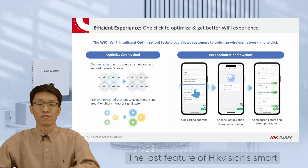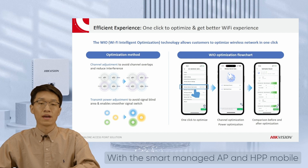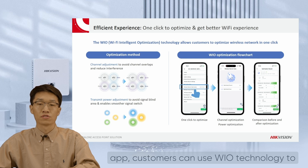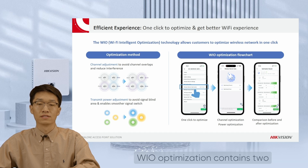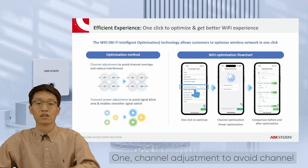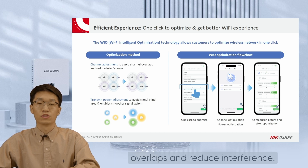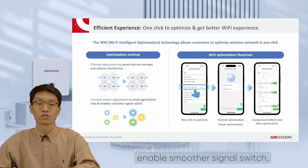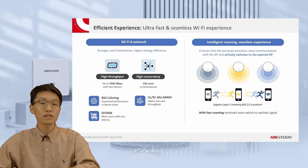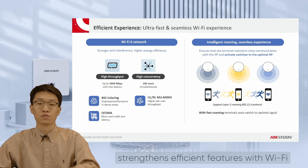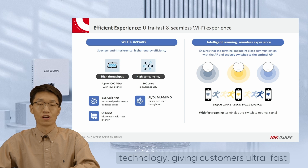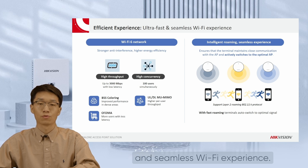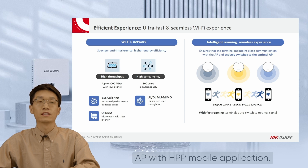The last feature of HackerVision's Smart Managed AP is Efficient. With the Smart Managed AP and HPP mobile app, customers can use WIO technology to optimize the network in just one click. WIO optimization contains two adjustment methods: one, channel adjustment to avoid channel overlaps and reduce interference; two, transmit power adjustment to avoid signal blind areas and enable smoother signal switching. HackerVision's Smart Managed AP further strengthens the efficient feature with Wi-Fi 6 network and intelligent roaming technology, giving customers ultra-fast and seamless Wi-Fi experience.